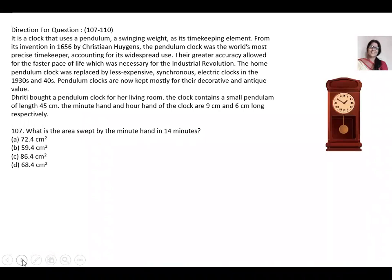So we will read the question very mindfully. Now this question is about a clock that uses a pendulum, a swinging weight as its timekeeping element from its invention in 1656 by Christian Huygens. The pendulum clock was the world's most precise timekeeper accounting for its widespread use.